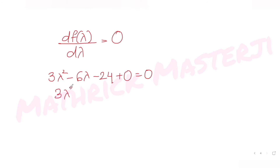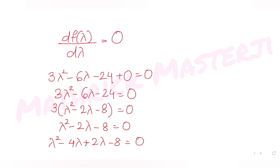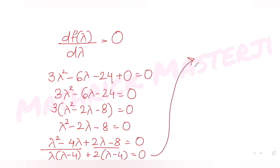Simplifying 3λ² - 6λ - 24 = 0, dividing by 3 gives λ² - 2λ - 8 = 0. Factoring: (λ - 4)(λ + 2) = 0, so λ = 4 or λ = -2. These are the two critical values of lambda.